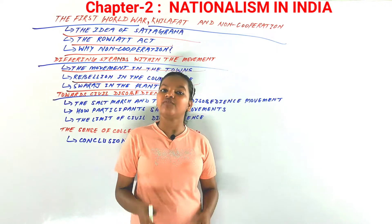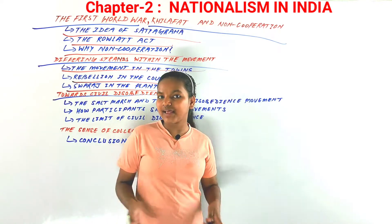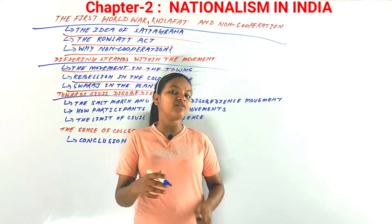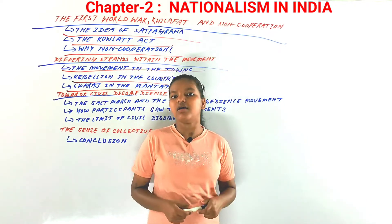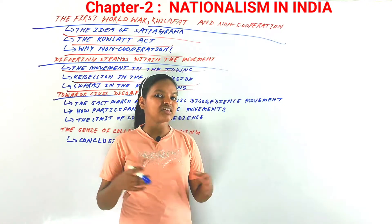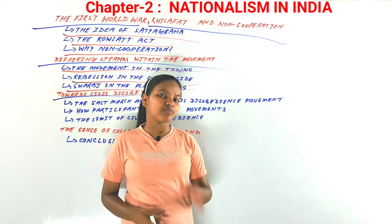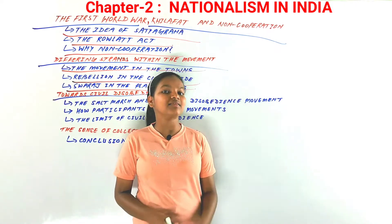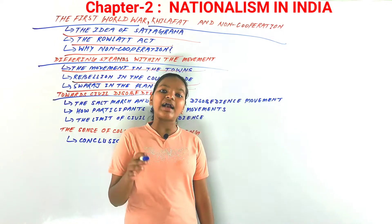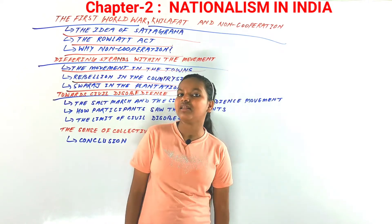People had already lost hope after the Non-Cooperation Movement and there was less support. Muslim communities had also parted from Mahatma Gandhi. That's when Mahatma Gandhi thought of raising a new issue that would be popular among all people — and that was the issue of salt. He thought that salt, consumed by rich and poor in the same quantity, should not have any tax at all. It was a basic consumption for every person in India. So he started a Salt March.